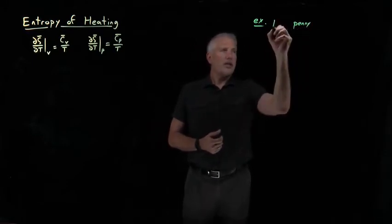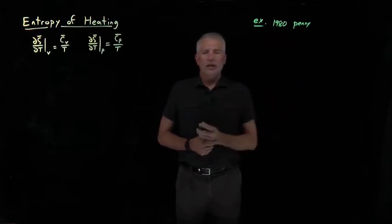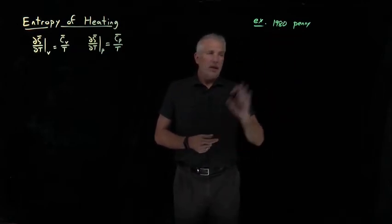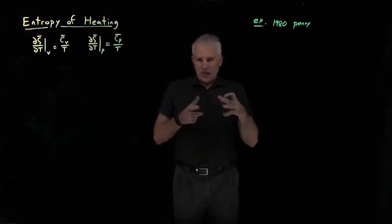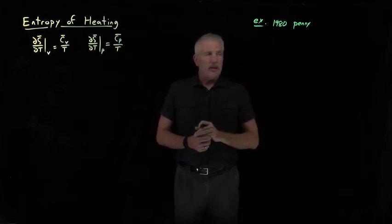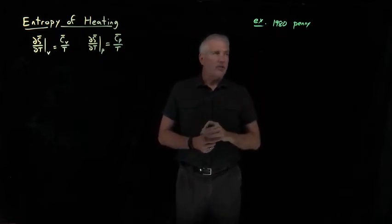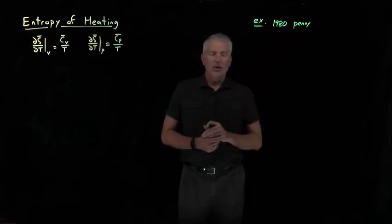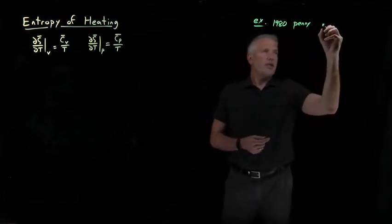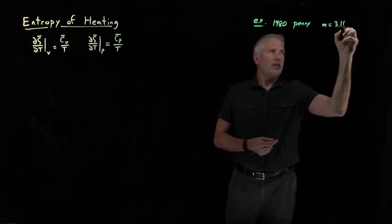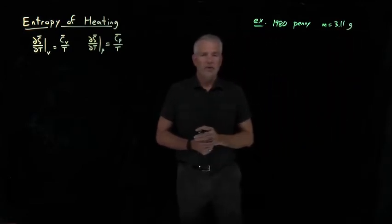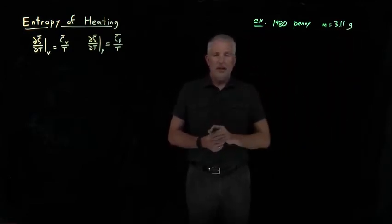Let's say I have an old penny, a 1980 penny that I pull out of my pocket. Modern pennies are made of zinc with a copper coating, but before the early 1980s, they were made almost entirely of copper. So I'll say I've got a pure copper penny. Pennies weigh, it turns out, 3.11 grams.